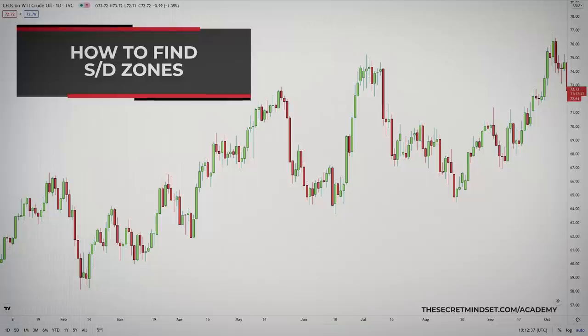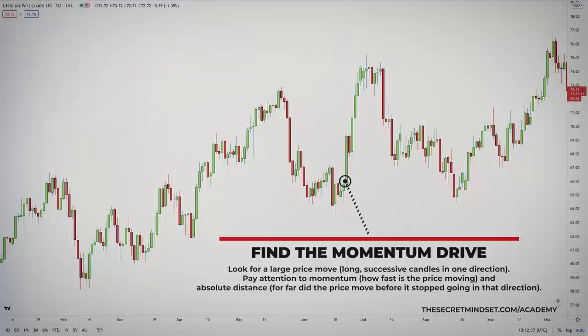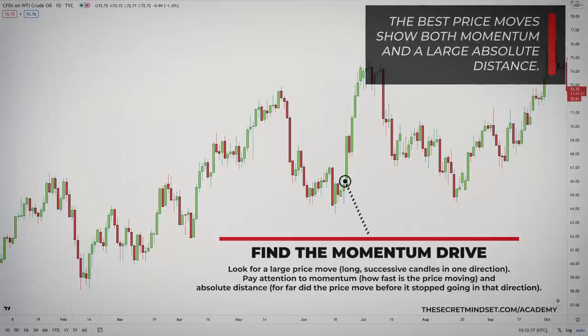Use the following steps to identify supply and demand. First, you find the momentum drive — here you are looking for a large price move. Long, successive candles in one direction work the best. Just open any chart and it shouldn't be too difficult to find those. Both the momentum, how fast the price is moving, and the absolute distance, how far did price move before it stopped going in that direction, are relevant here. The best price moves show both momentum and large absolute distance.